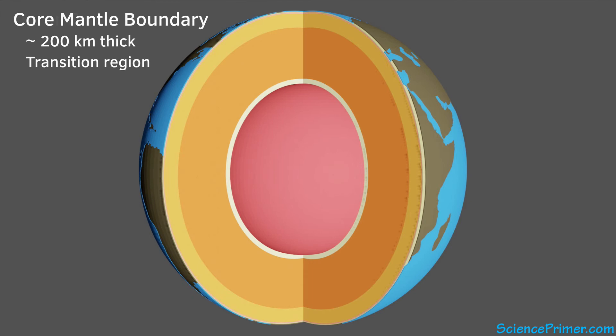Below the core-mantle boundary is the outer core. The outer core extends another 2,200 kilometers towards the center of the Earth. It is primarily iron. This iron is hot enough that even at the immense pressures found at these depths, it is liquid.